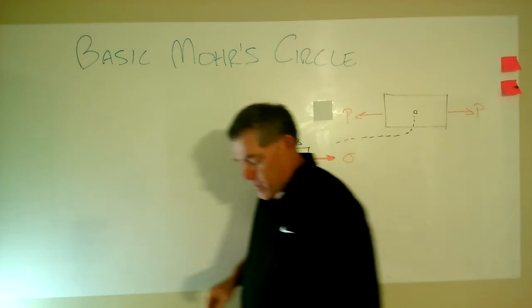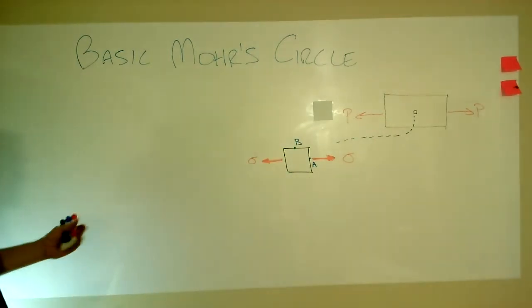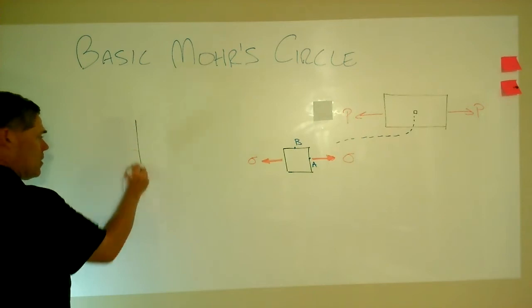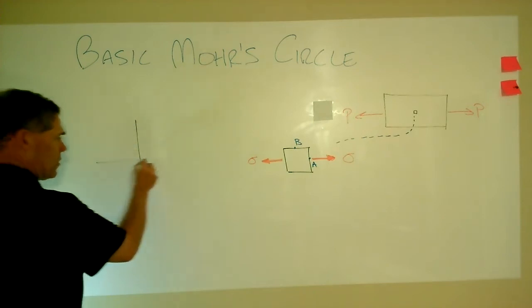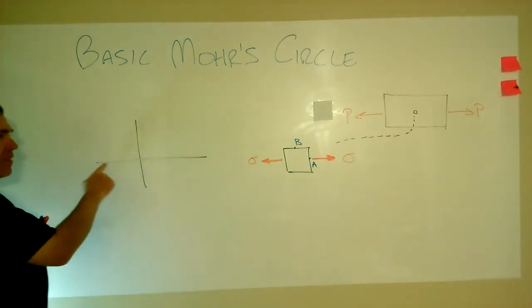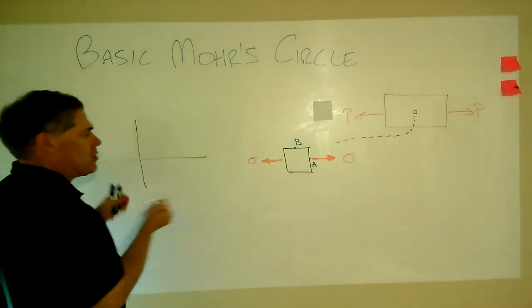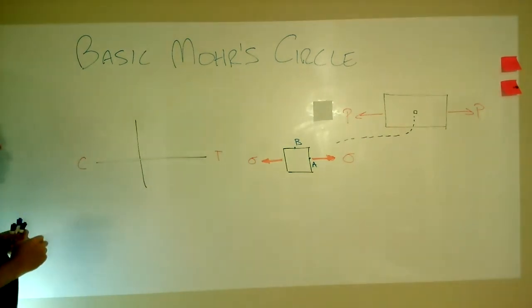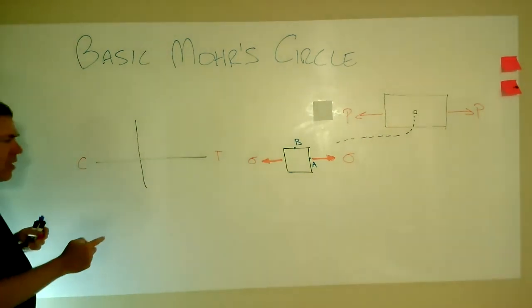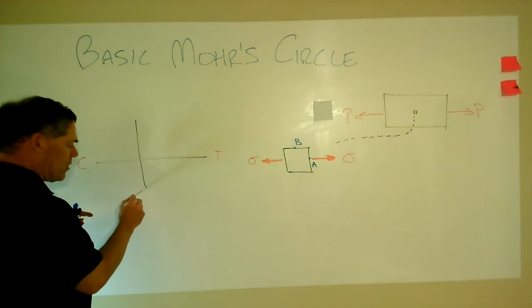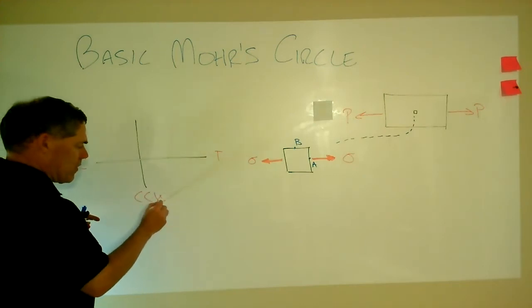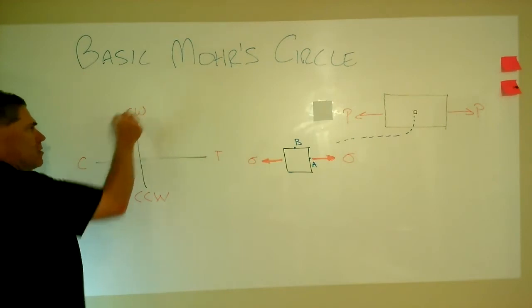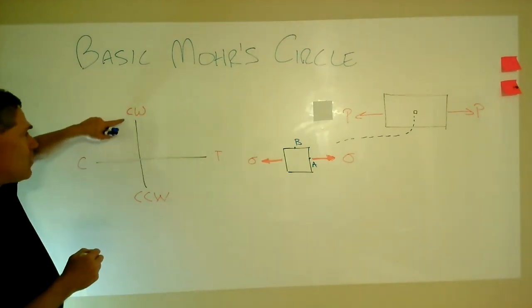So let's see how that works from creating Mohr's Circle. First step, of course, is let's just create our axes that go with our situation. And remember that the horizontal axis is going to be your normal stress action axis. And so we'll plot tension to the right, compression to the left.